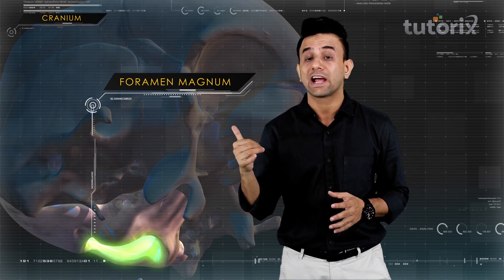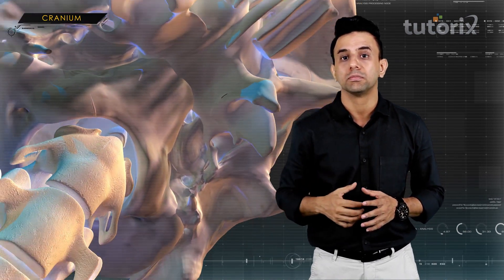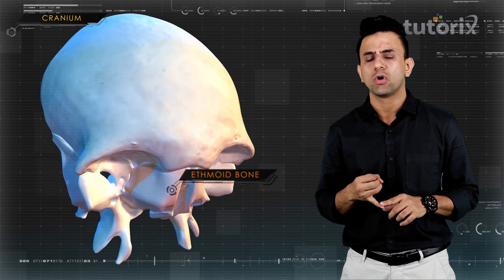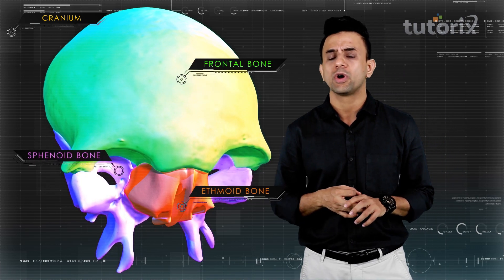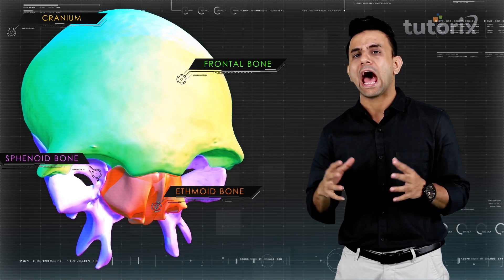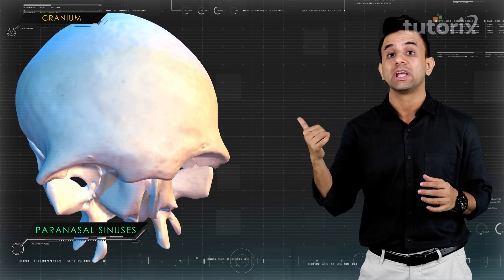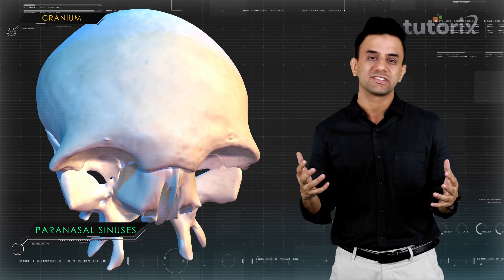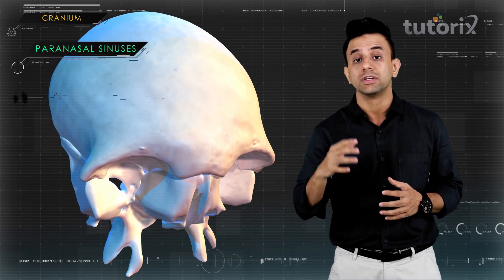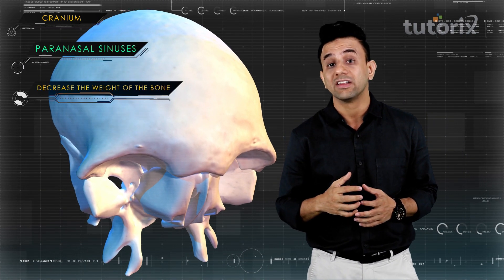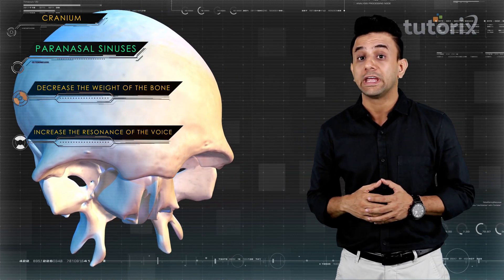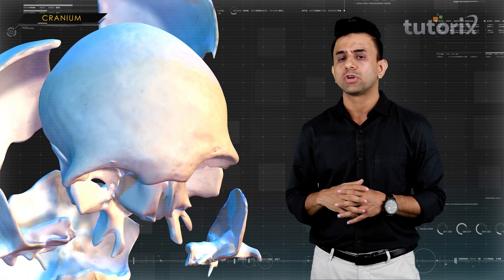The occipital bone has a large opening known as the foramen magnum, which allows the spinal cord to attach to the brain through the skull. The ethmoid, frontal, and sphenoid bones have small spaces between them known as paranasal sinuses. The paranasal sinuses decrease the weight of the bone and also increase the resonance of the voice, especially when you sing and hum.